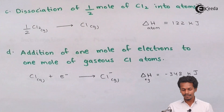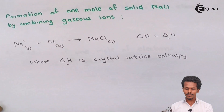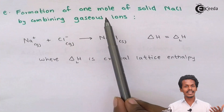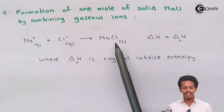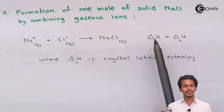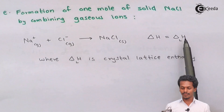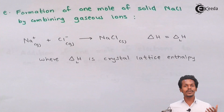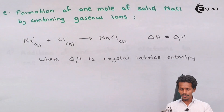Step E: Formation of NaCl solid from gaseous ions. Now that we have Na⁺ ions (from step B) and Cl⁻ ions (from step D), we can combine them. The Na⁺ and Cl⁻ gaseous ions combine to form solid NaCl. The energy released during this process is denoted ΔH_L, the crystal lattice enthalpy, which tells us how much energy the NaCl crystal possesses.